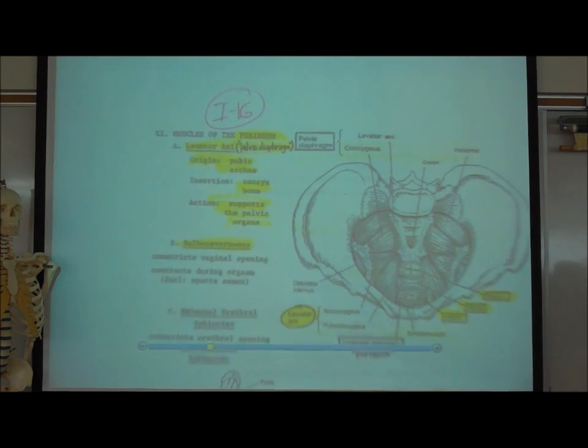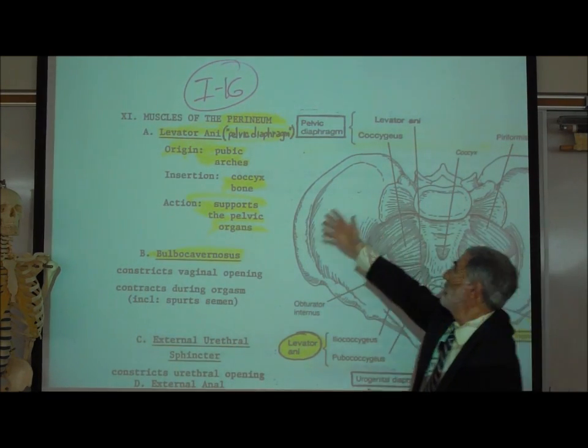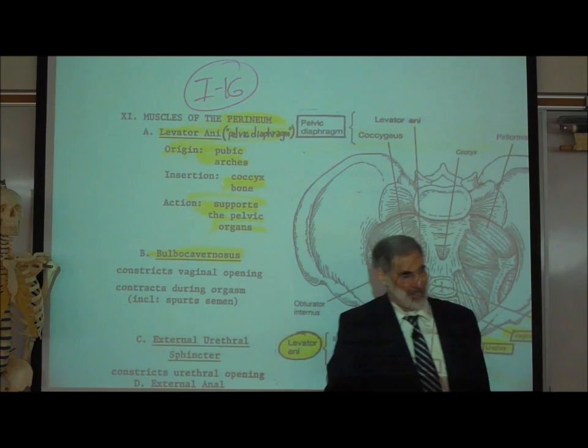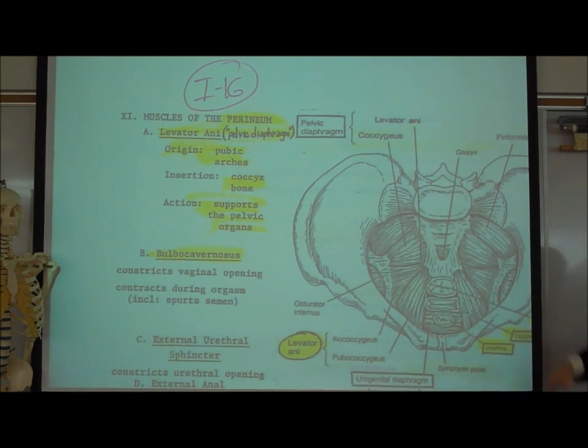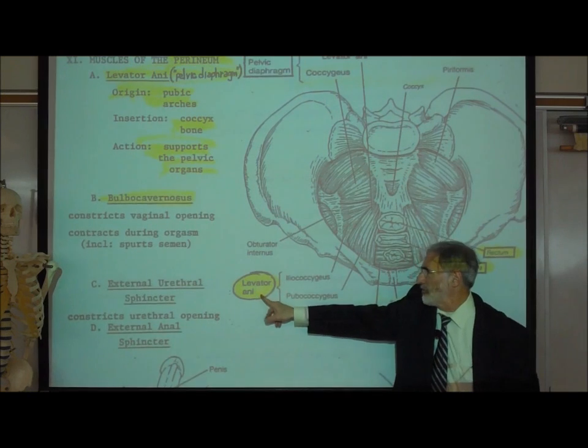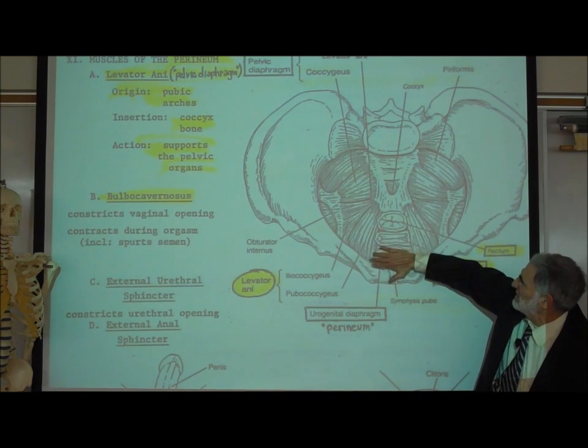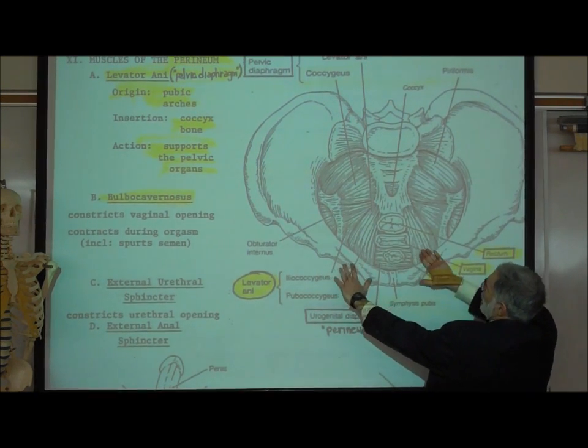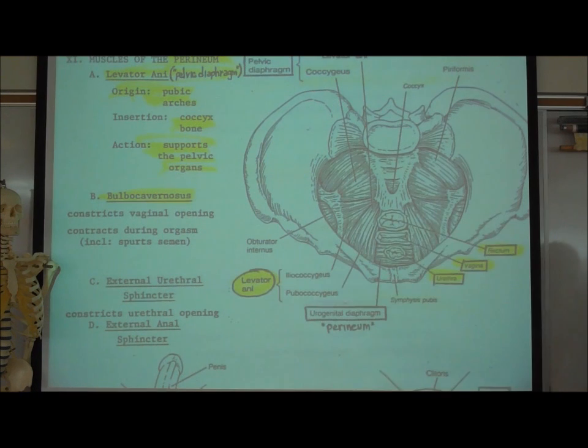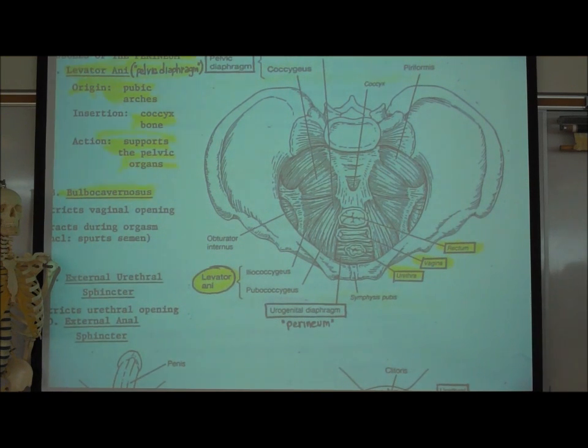And the word levator ani literally means to elevate or hold up the anus. It's also known as the pelvic diaphragm. So we said that they originate on the pubic arches and they insert on the coccyx bone and they support or hold up the pelvic organs. And there are a whole bunch of these muscles. Again, we're not going to learn them by name. Here you can see I circled levator ani and that includes muscles including the iliococcygeus and the pubococcygeus. In this picture, is this a male or a female pelvis that we're looking at?